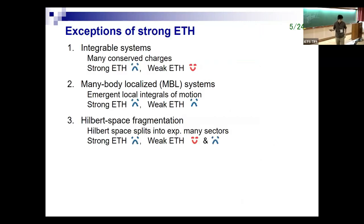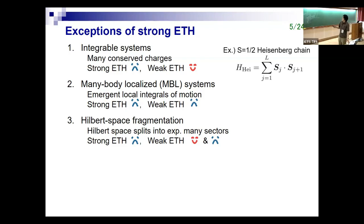There are several classes of exceptions where the strong ETH doesn't hold. Famous examples are integrable systems, in which many conserved charges constrain the dynamics — the strong version doesn't hold but the weak version does. Another example is many-body localized systems, in which both strong and weak ETH do not hold. A classic example of an integrable system is the s=1/2 Heisenberg chain, and an example of an MBL system adds a random magnetic field to the Heisenberg interaction.